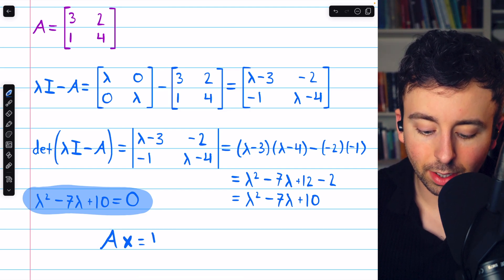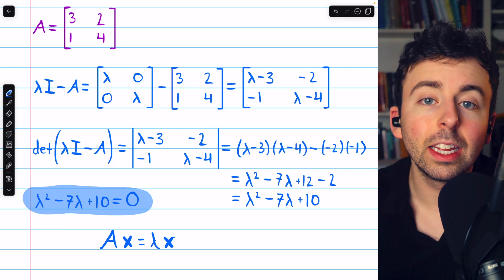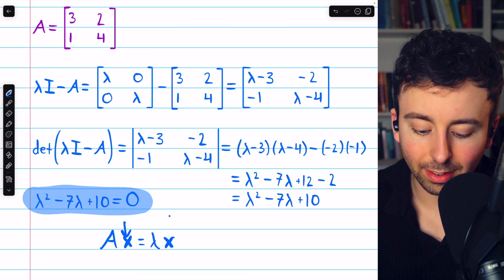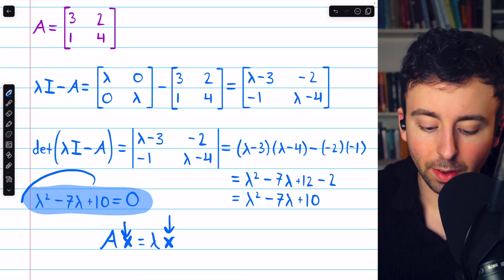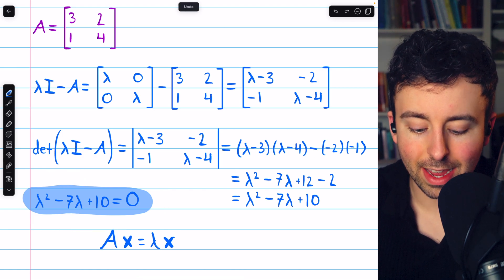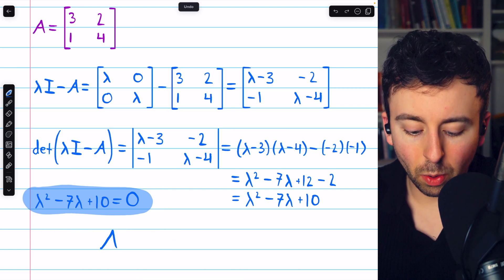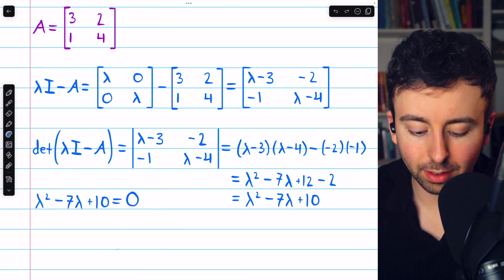AX equals lambda X, having non-trivial X solutions. Thus, any lambda value satisfying this equation is an eigenvalue. So all we have to do is factor this to solve for lambda.